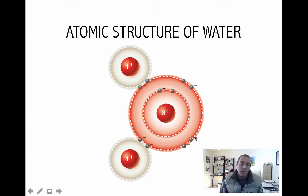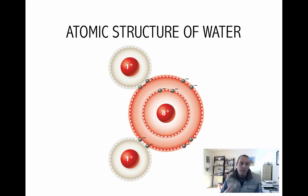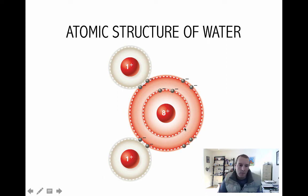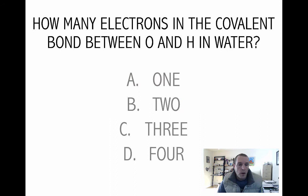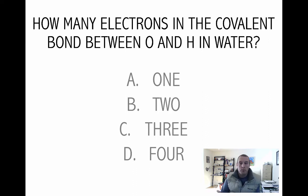When these atoms combine in this way, we get more stability for the oxygen, more stability for the hydrogen, and we get a water molecule. What we just looked at were electrons being shared between two atoms, and when electrons are shared between two atoms, you get a covalent bond forming. That's going to be one of the really important bonds we talk about when we discuss molecules.